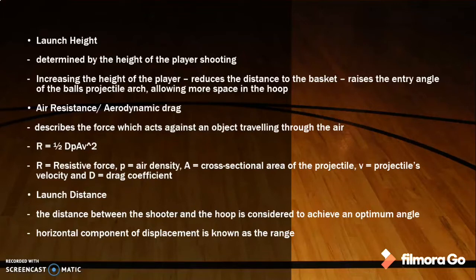Fourth, air resistance, or aerodynamic drag, describes the force which acts against an object travelling through the air. The greater the surface area, the greater the air resistance on the ball. The drag formula can be used to calculate air resistance: R = 1/2 × D × ρ × A × V², where R is resistance, A is the cross-sectional area of the projectile, V is the projectile's velocity, and D is the drag coefficient.